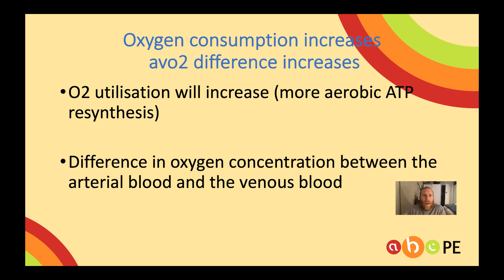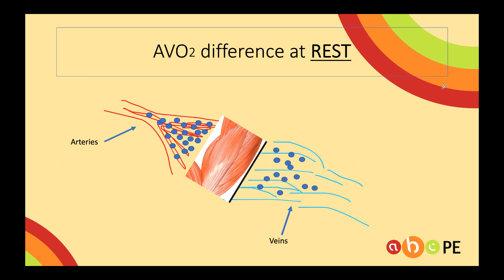The second part of our acronym is O — oxygen consumption is going to increase. With this we have an AVO2 difference, which will also increase. As we've talked about in past videos, when we exercise we need to use more oxygen, therefore our muscles are going to consume more of the oxygen being delivered to them. Hopefully this drawing of mine will help you — here we have the arteries, which take blood away from the heart with lots of oxygen, delivering it to the muscles. On the other side, the veins deliver blood back to the heart.